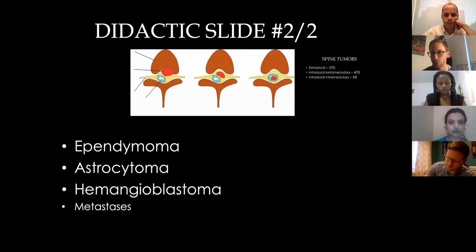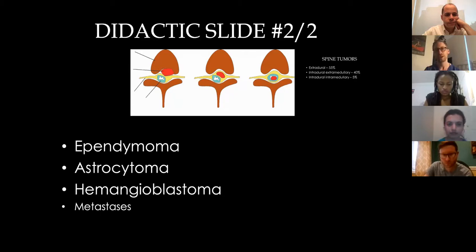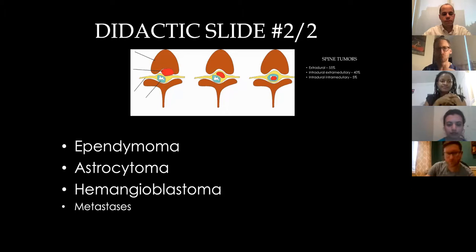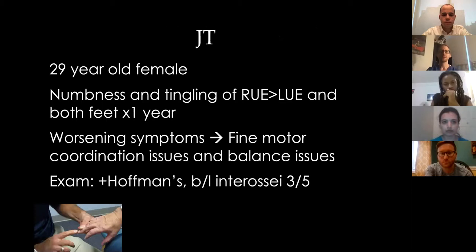Next case — and this is my second major didactic slide. We're going to shift gears and talk about the 5%, the rarer intradural intramedullary case. Now we're focusing on a tumor that's inside your spinal canal, inside the dura, and inside the spinal cord itself. Of the three types, it's the most risky and carries the most morbidity. When you're thinking intradural intramedullary, there are three basic types of tumors: ependymoma, astrocytoma, and hemangioblastoma. Metastases are much more rare — I've seen one in my career.